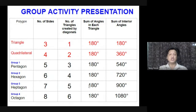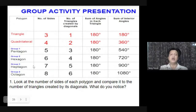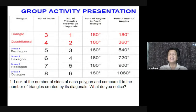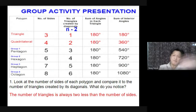Based on the activity performed today, I have questions — actually five questions. Look at the number of sides of each polygon and compare it to the number of triangles created by its diagonal. What do you notice? Yes, Gabriel — very good answer — the number of triangles is always two less than the number of sides. And what do you think is the formula? Yes, Mark — very good — that is n minus 2. Okay, next for number two: What pattern did you notice when finding the sum of angles in each polygon? Yes, Lma — very good answer — the sum goes up by 180 every time you add a side to the polygon.